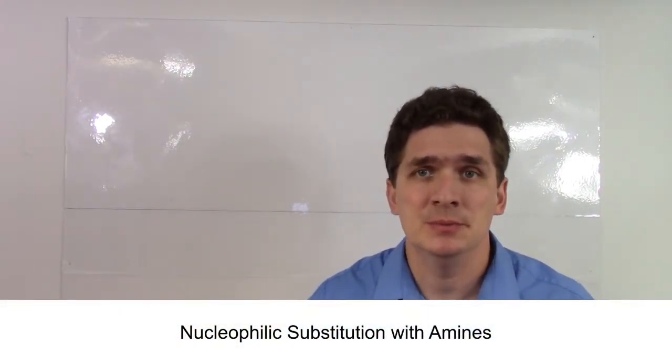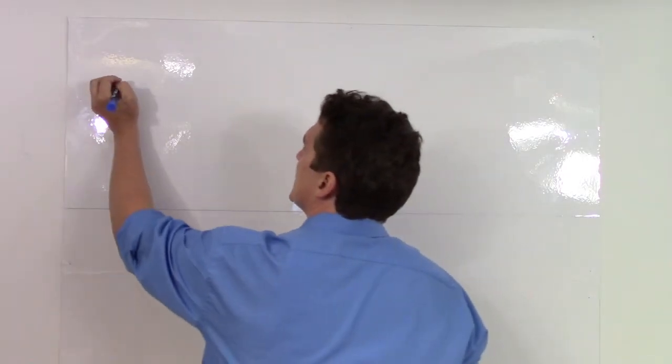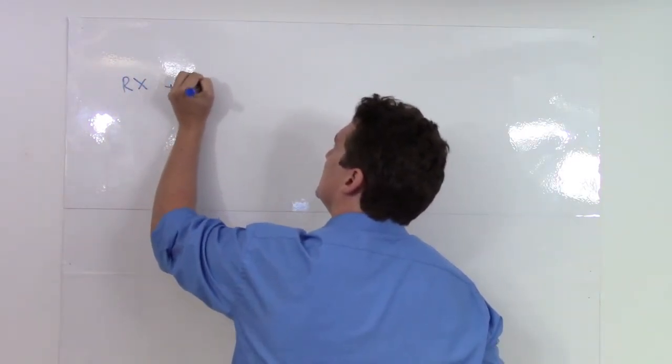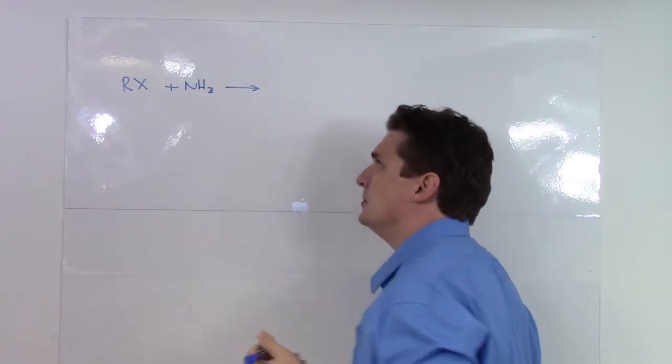The reason we need to talk about this, we're going to start with ammonia, but you'll hopefully pick up pretty quick why this is going to be a problem for us. So let's say we have some alkyl halide RX and we add NH3 ammonia to it. What happens?